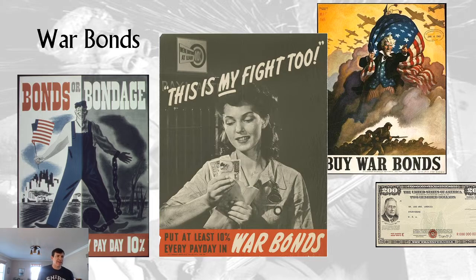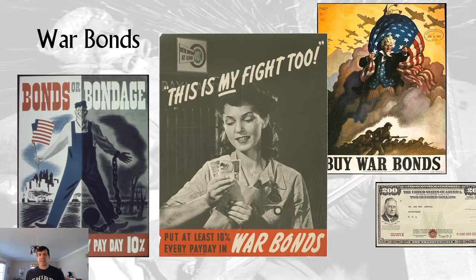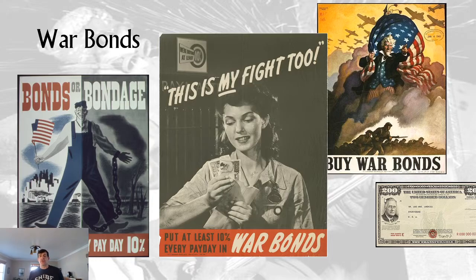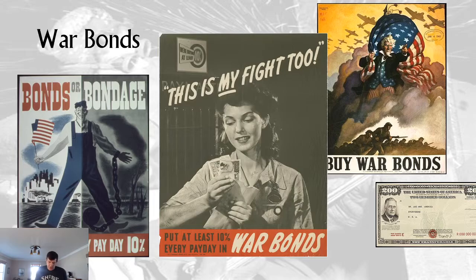War bonds were another way to raise money — 'buy bonds or bondage,' putting aside 10% for war bonds. There's Uncle Sam, and an example of a war bond with FDR's face on it. Regular people and businesses were pushed to buy bonds. Bonds are the way governments borrow money: you buy a $100 bond and in 15 or 20 years get $200 back — that's the interest. At the end of every movie made during World War II, they often advertised bonds. Propaganda for bonds was everywhere and was one of the biggest measures of wartime propaganda.